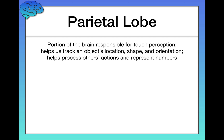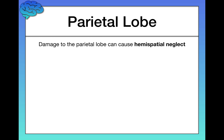The parietal lobe also helps us process other people's actions — understanding why they behaved in a certain way — and it's important for representing numbers, including counting and math. So look at this one lobe and the varied responsibilities it has. It's really fascinating. Damage to the parietal lobe can sometimes result in what's called hemispatial neglect, among other possible disorders.